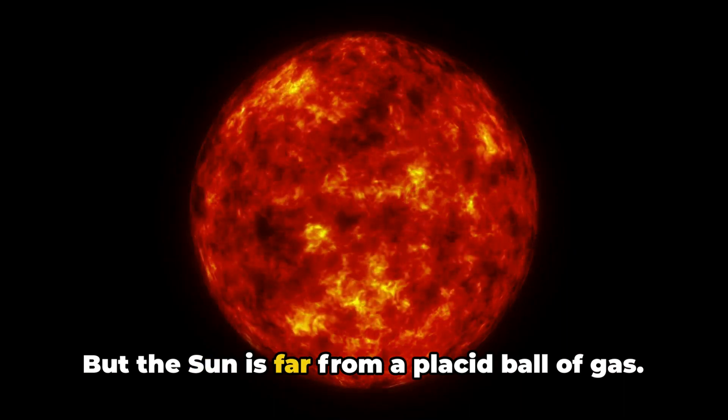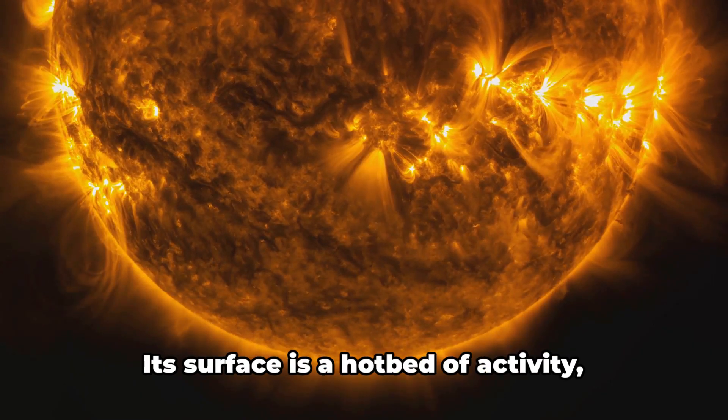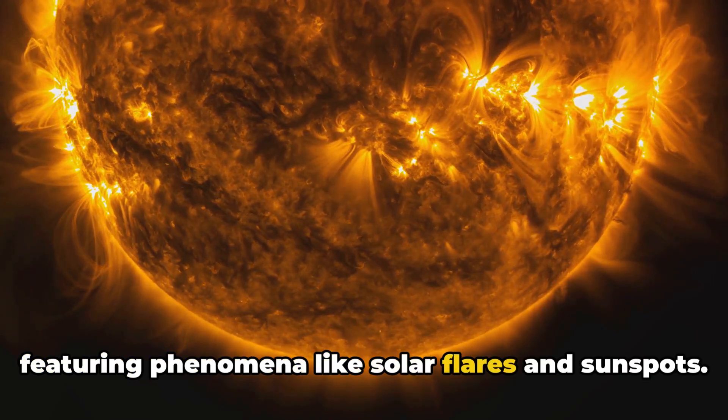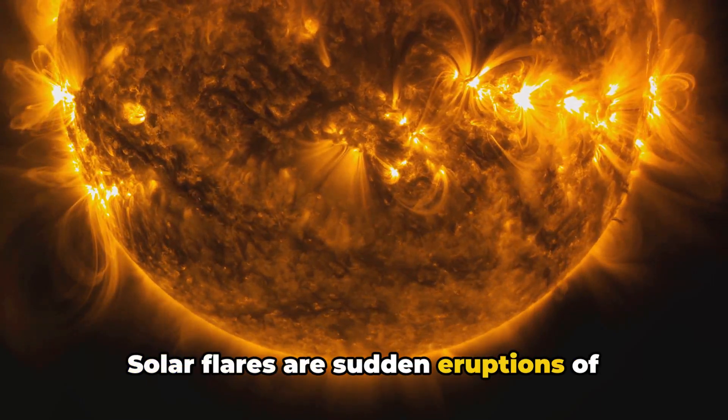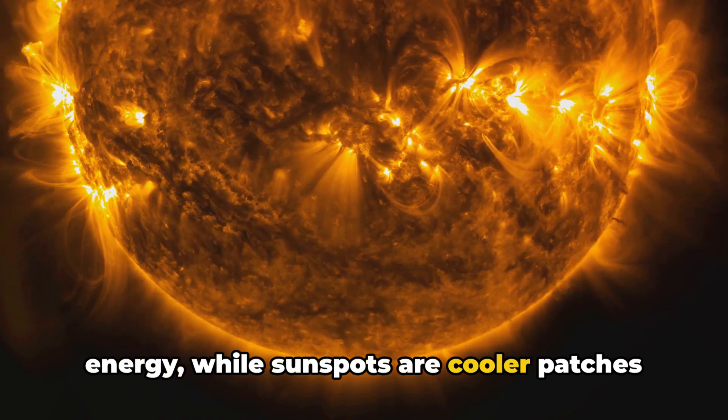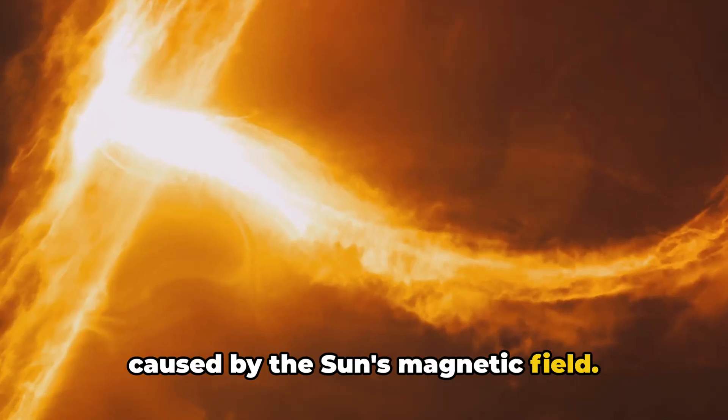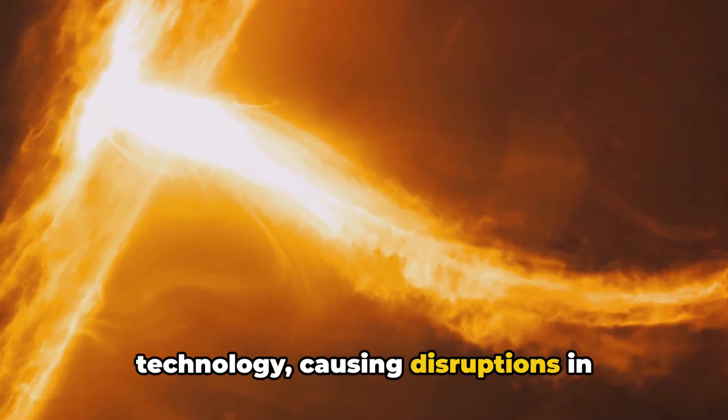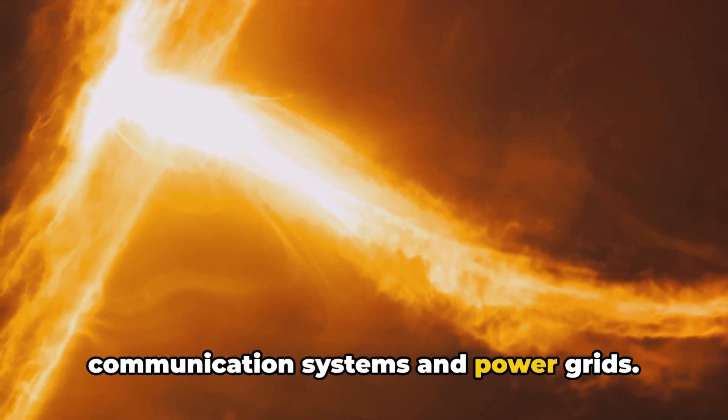But the sun is far from a placid ball of gas. Its surface is a hotbed of activity, featuring phenomena like solar flares and sunspots. Solar flares are sudden eruptions of energy, while sunspots are cooler patches caused by the sun's magnetic field. These occurrences can affect Earth's technology, causing disruptions in communication systems and power grids.